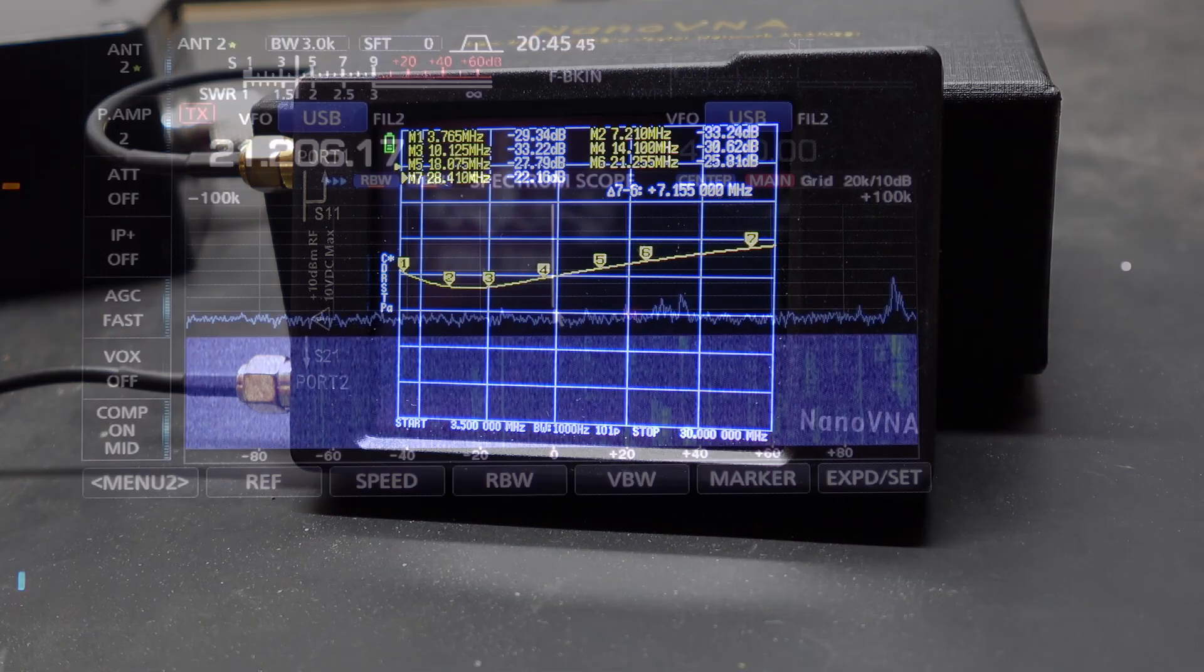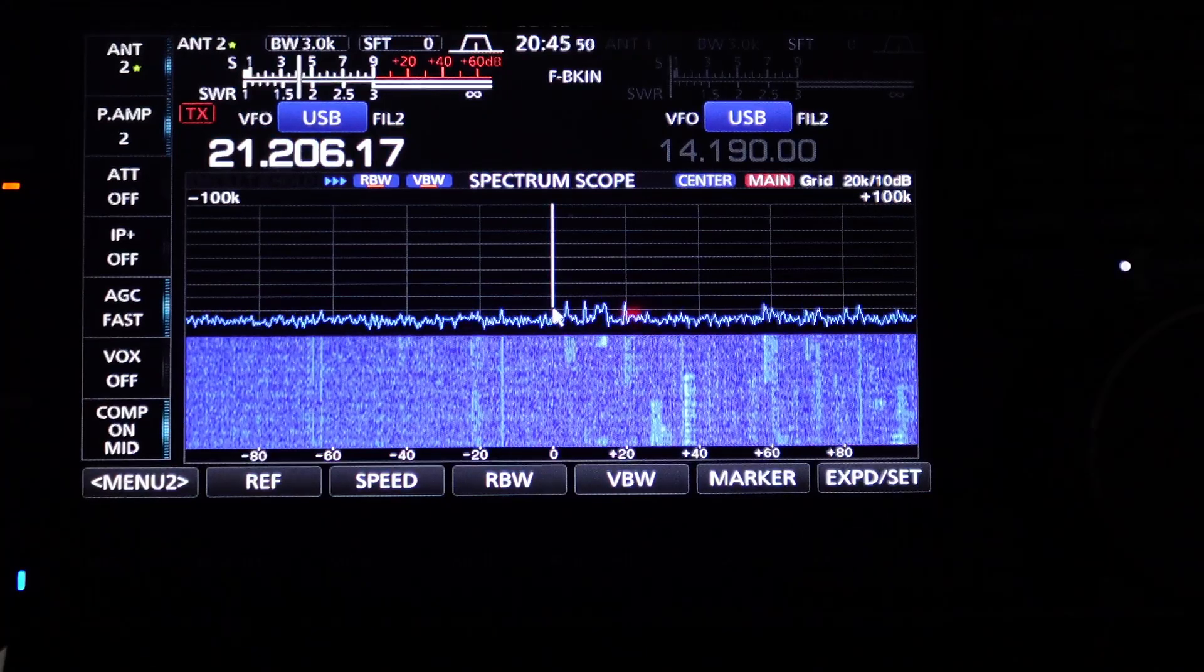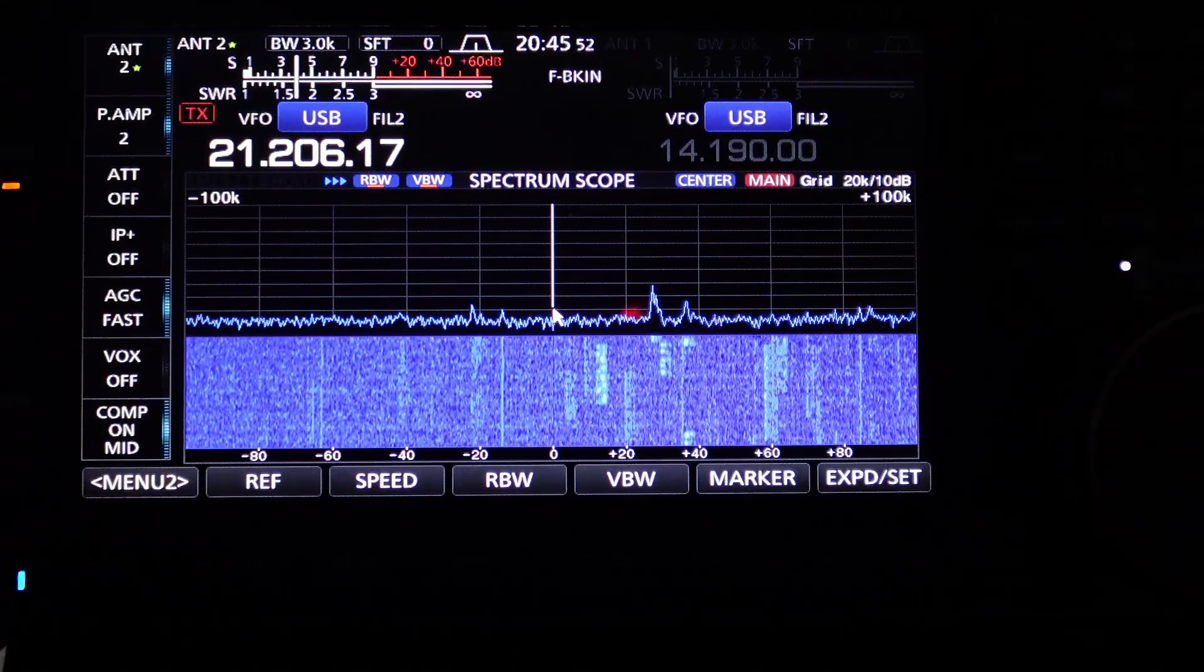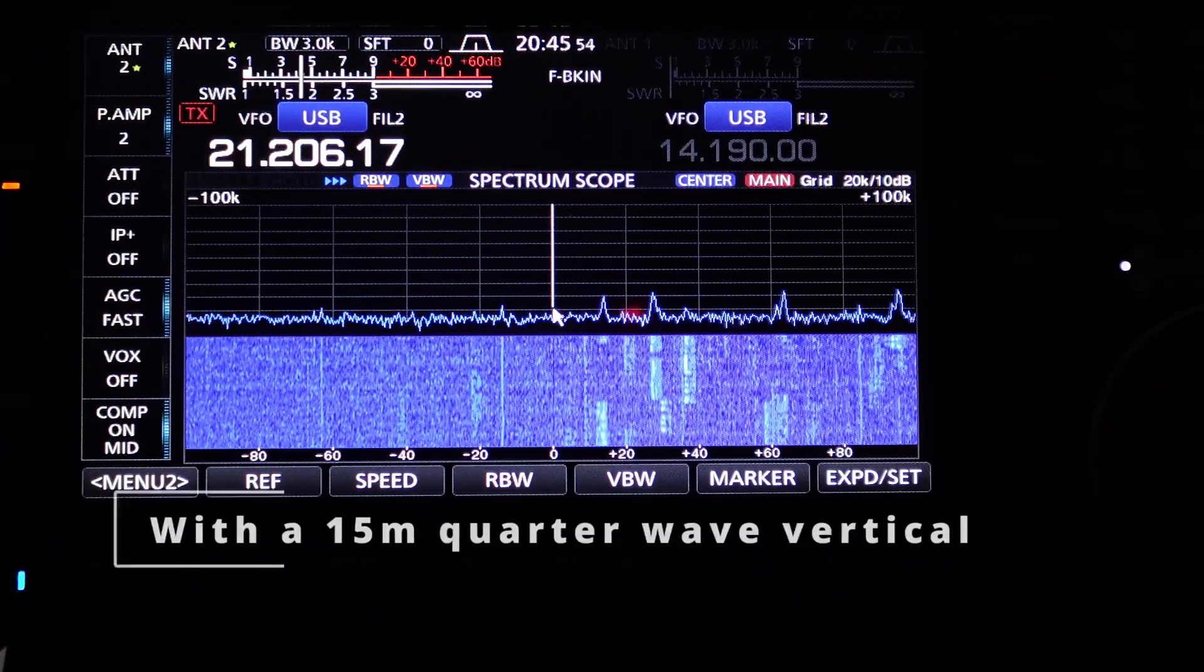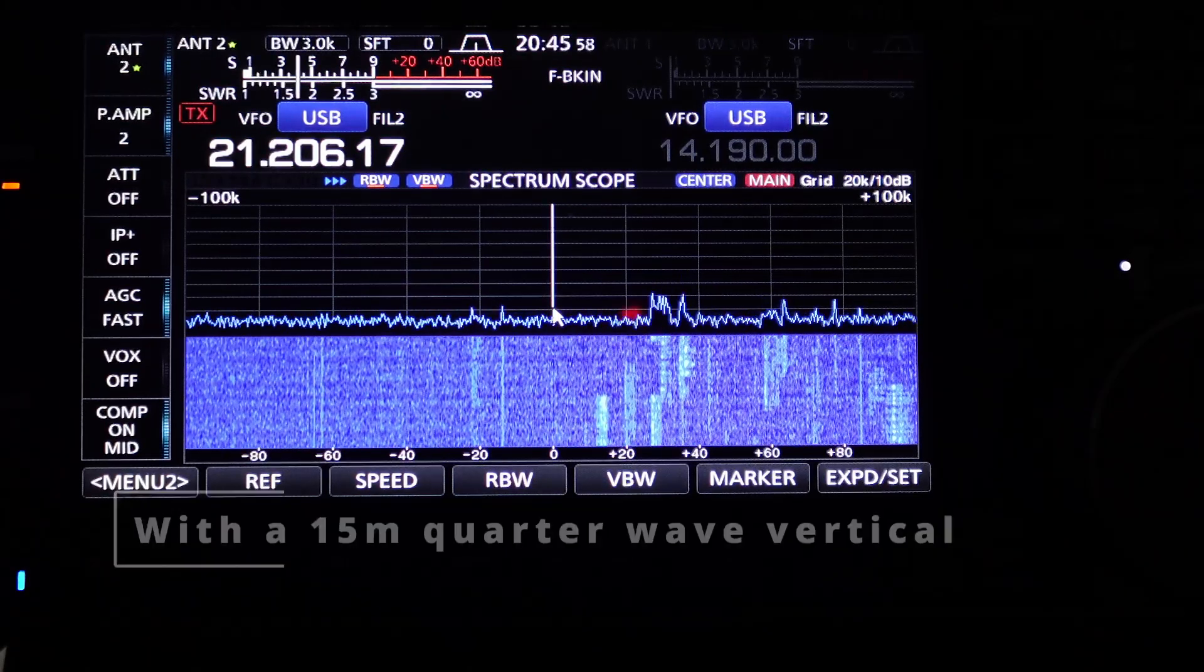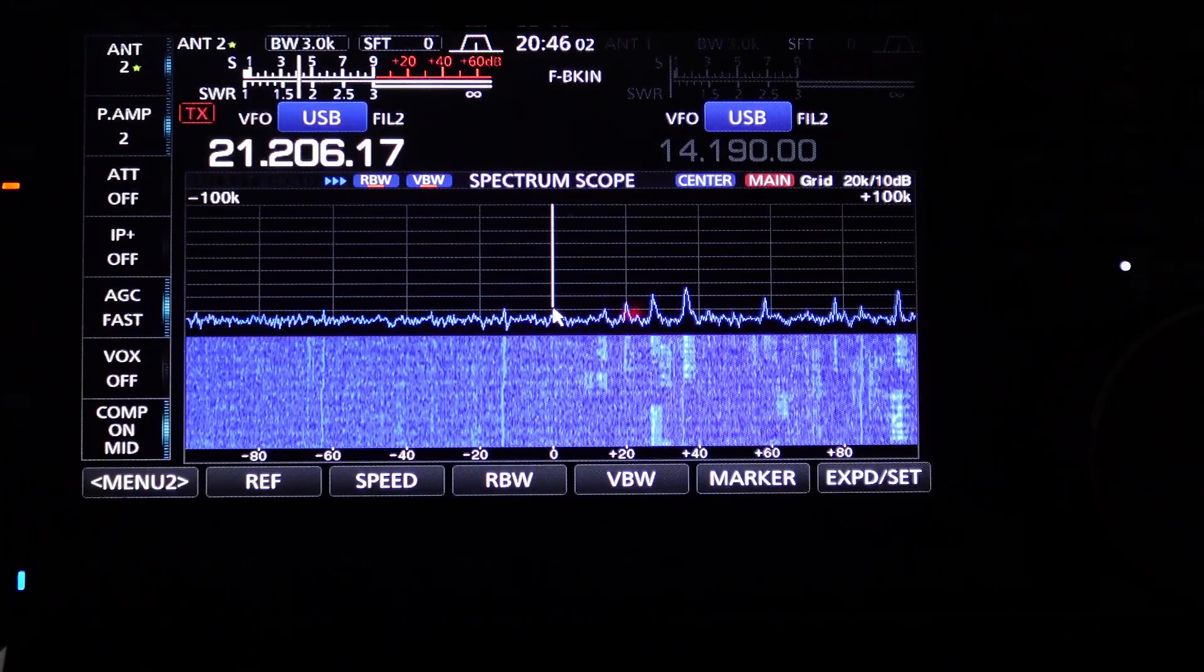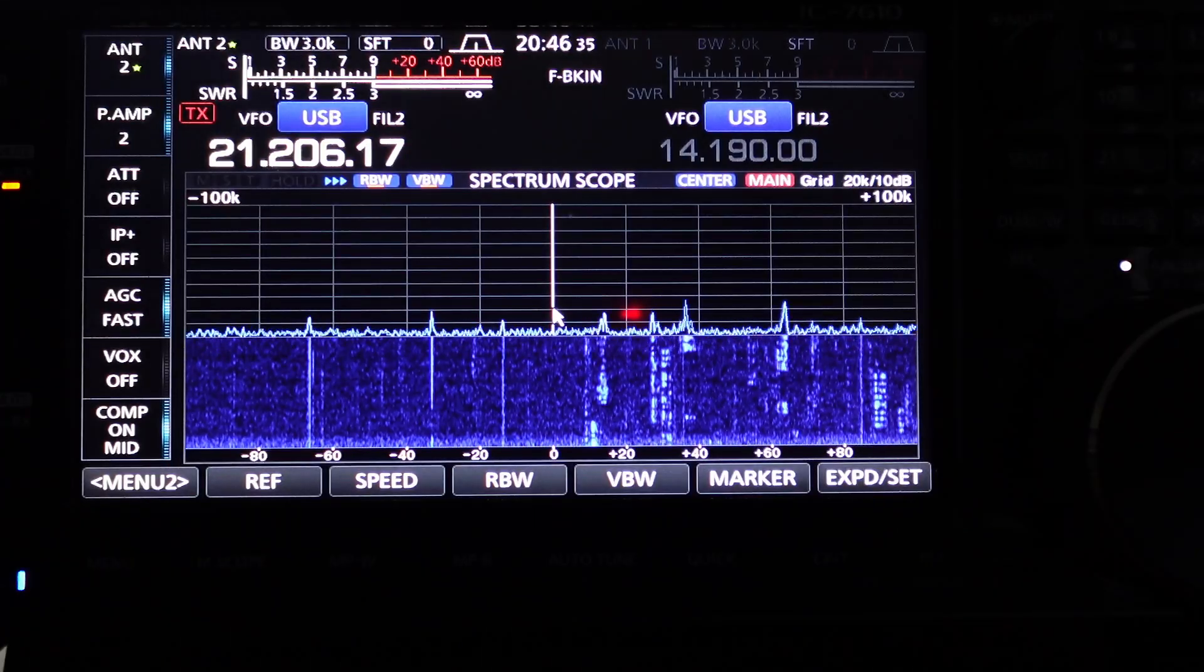So the last thing I want to do is I want to look at the noise floor with and without the common mode choke. You can see that the noise floor here is probably around S4, this is 15 meters connected to a 15 meter vertical antenna, it's just a wire and this is without the common mode choke. Now I'm going to put the common mode choke and let's see what it looks like.